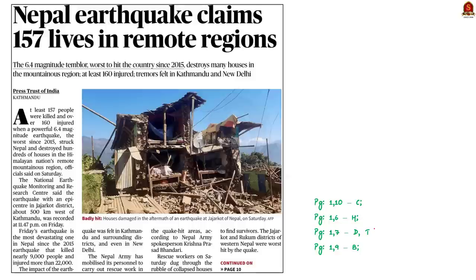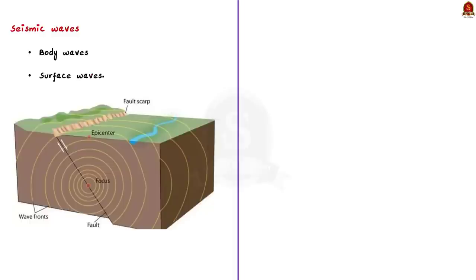A powerful earthquake with a magnitude of 6.4 on the Richter scale struck Nepal, causing significant damage in remote areas and resulting in 157 deaths. In our discussion today, we will see some points about seismic waves caused by earthquakes. Seismic waves are waves of energy that travel through the earth's layers. They are created due to earthquakes, volcanic eruptions, magma movements, landslides and large man-made explosions. Earthquakes generate two primary categories of seismic waves: body waves and surface waves.